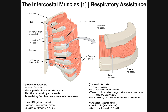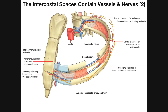Each of these muscles — external, internal, and innermost intercostals — is associated with membranes. It's not that the external intercostals are muscular along the entire length of the space; the same is true of the internal and innermost intercostals. Each one is muscular only in a certain part, and then more tendinous or membranous in another part.